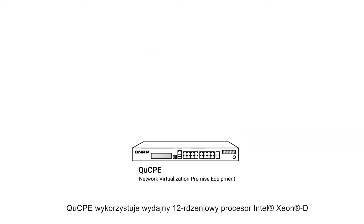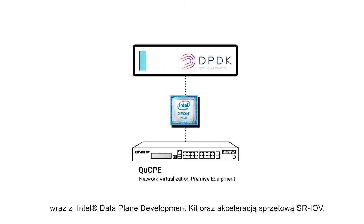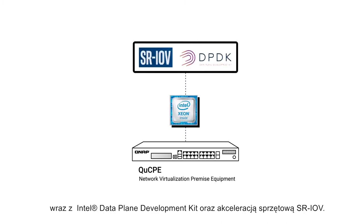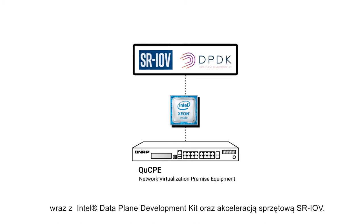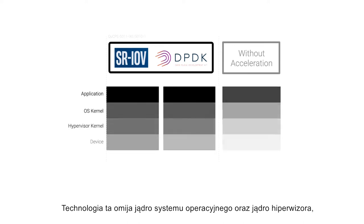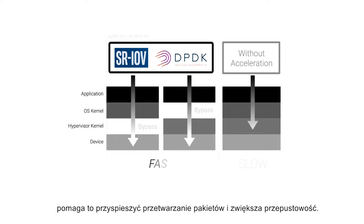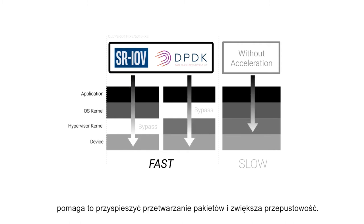The QCPE series adopts high-performance Intel Xeon D 12-core processors with Intel Data Plane Development Kit and SmartNIC SR-IOV hardware acceleration technology. Through bypassing the operating system kernel or hypervisor kernel space, this helps speed up packet processing performance and throughput.